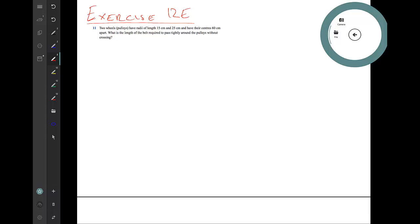Okay, so here we're looking at exercise 12e question 11 and we're going to start off by trying to draw a diagram that's described in the question. So what I'll do is I'll draw my two wheels.